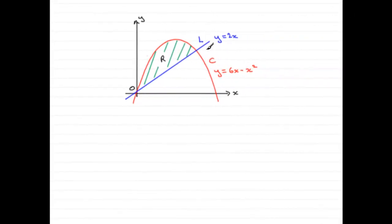Now what I've done is just copy the diagram that we're given. We have the line L, which is equation y equals 2x, and the curve C, which has equation y equals 6x minus x squared.